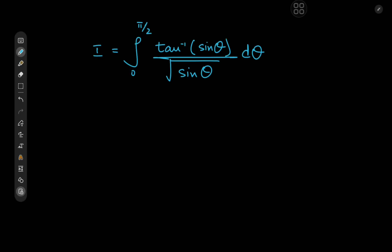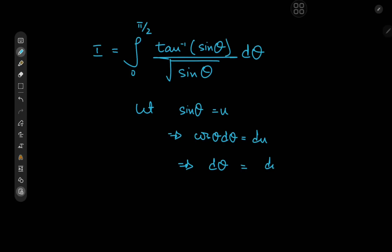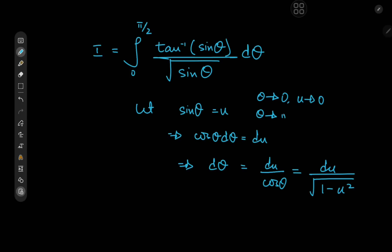How do we want to begin the solution development? Well, we're integrating from 0 to pi by 2 and we have sine functions involved. We might as well try the substitution of letting sine theta equal u. This implies that cosine theta d theta equals du, and this further implies that d theta is du divided by cosine theta. Now cosine theta would be root 1 minus sine squared theta, and sine theta is just u, so we have root 1 minus u squared. As theta approaches 0, u approaches sine 0, which is 0. And as theta approaches pi by 2, u approaches 1.